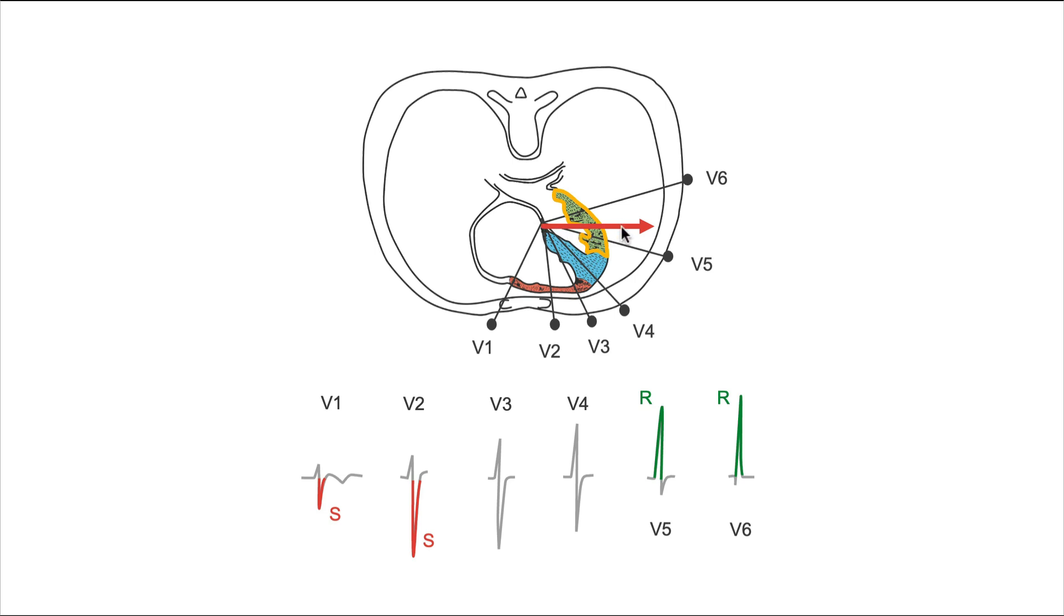This vector, this depolarization moves towards V5 and V6, and that's why we have these large deflections in these leads. Similarly, we get a negative deflection in the leads that it moves away from. In other words, the deep S-waves over here are pretty much the same thing as the R-waves over here, just in reverse.